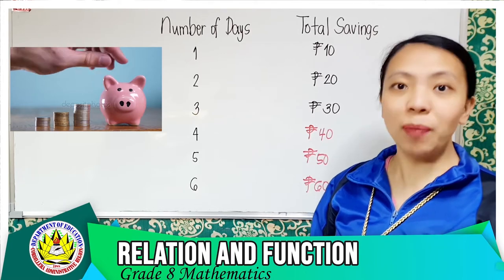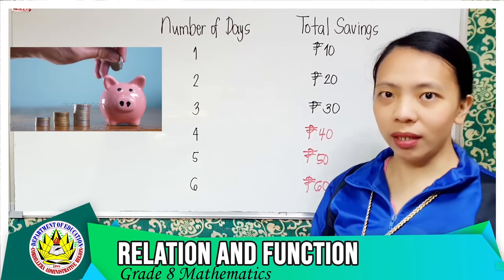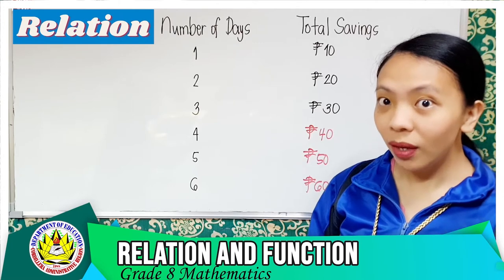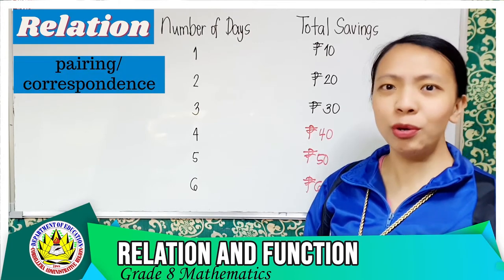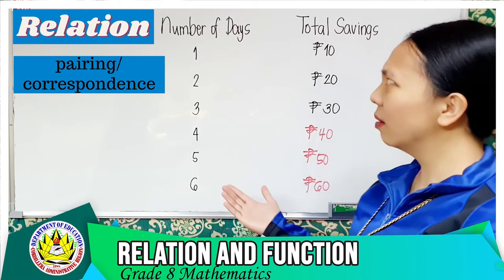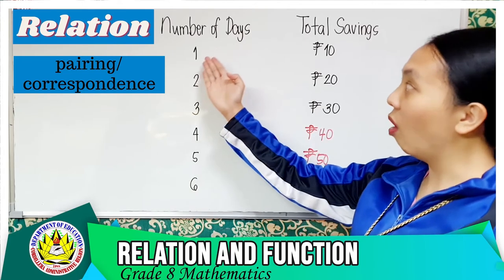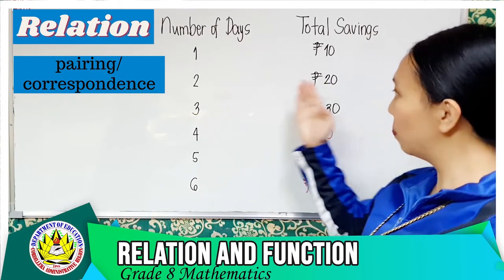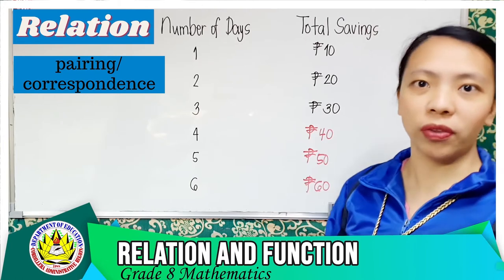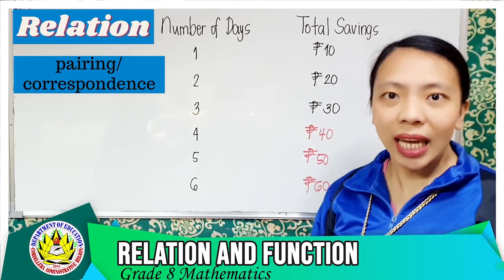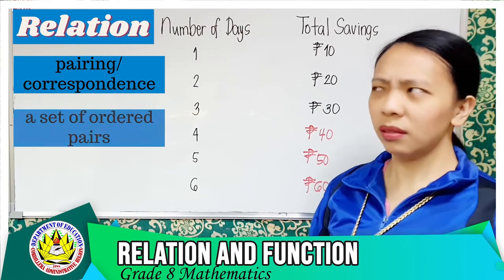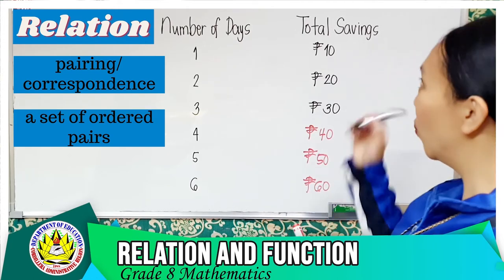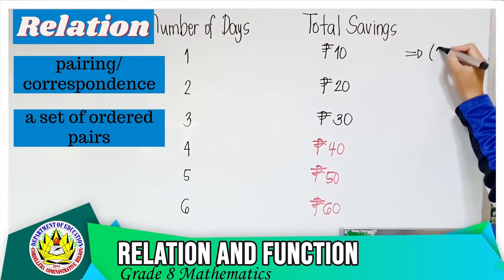This particular scenario is an example of a relation. Why is it so? Because it shows a pairing or a correspondence between two quantities. One is paired to 10, two is paired to 20, three is paired to 30, and so on and so forth. In other words, it is a set of ordered pairs.